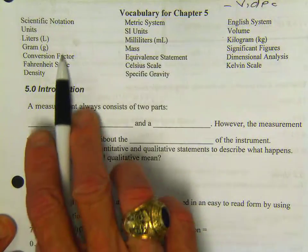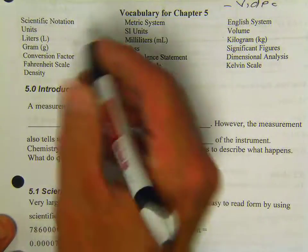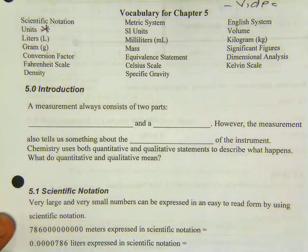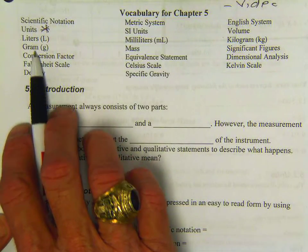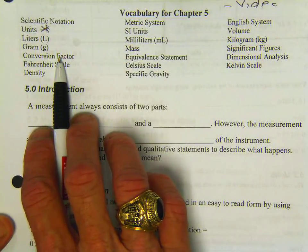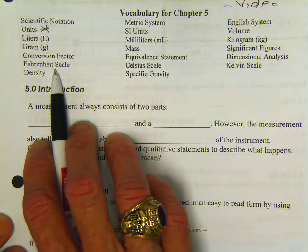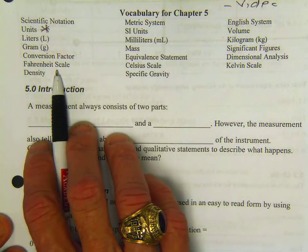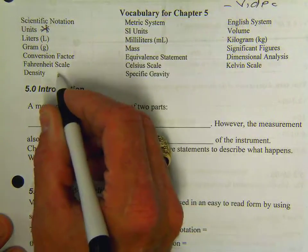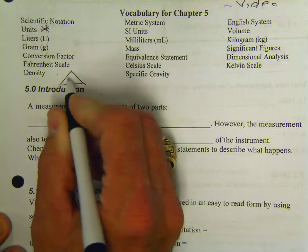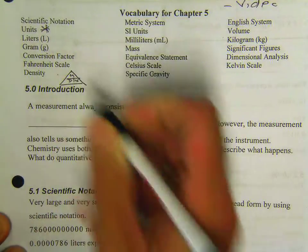You can see some of the terms we're going to be looking at here, learning about scientific notation. Units are very, very important. Liters is the basic unit for volume. Grams is the basic unit for mass. A conversion factor we talked about being used in dimensional analysis. The Fahrenheit scale is the temperature scale that we use here in the United States. Density is mass over volume, and you might remember our little DMV.